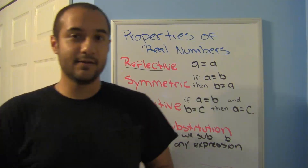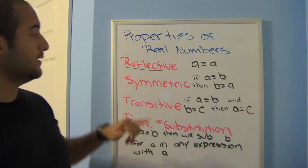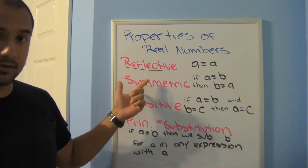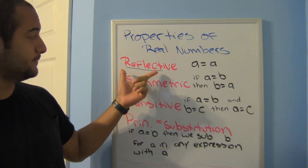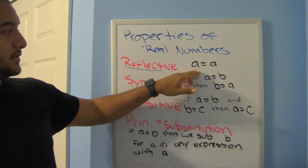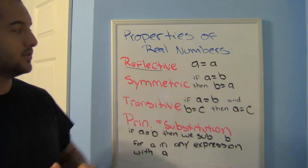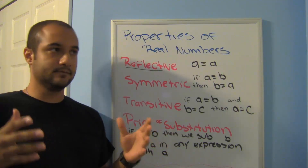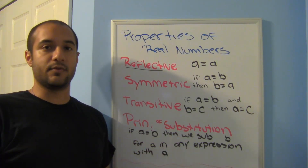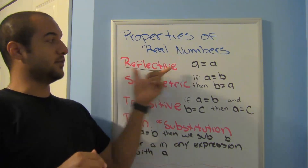The first property we're going to look at is the reflective property. Notice the root word 'reflect' — here you can see that a is equal to a. So what you're saying is that the number three is equal to the number three. You know that already, and that's called the reflective property: a is equal to a.